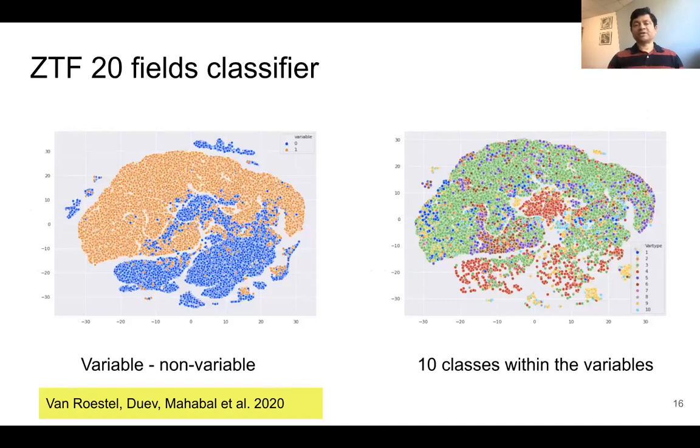This is t-SNE visualization. On the left you see just the variable, non-variable separation. And once you take out the non-variables, the variables that are left, those are the 10 classes that are seen on the right-hand side.